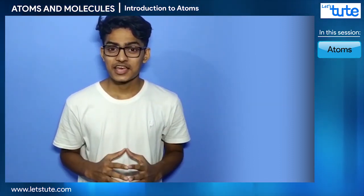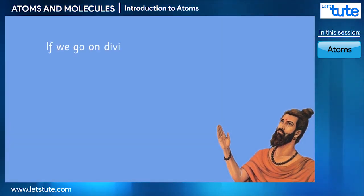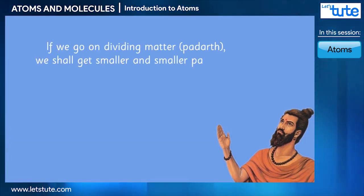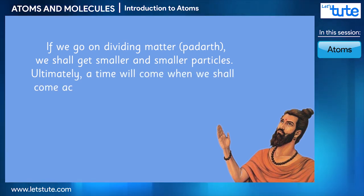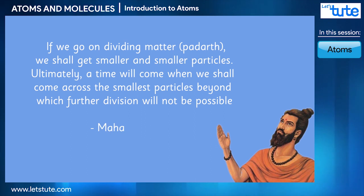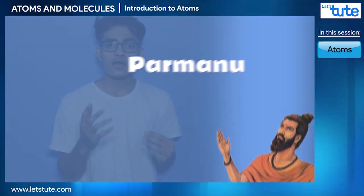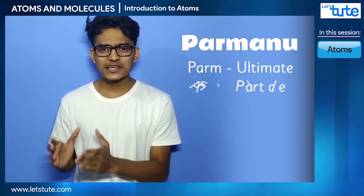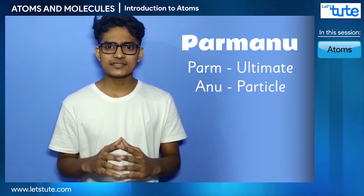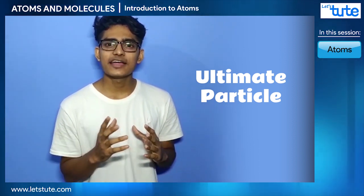An Indian sage named Maharishi Karnad said that if we take a padat and keep dividing it, there will be a point where we can no longer divide that padat into smaller particles. He named that particle as Parmaru, where 'Param' means ultimate and 'Anu' means particle.